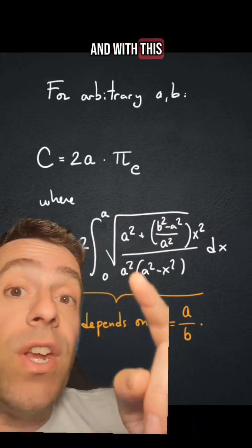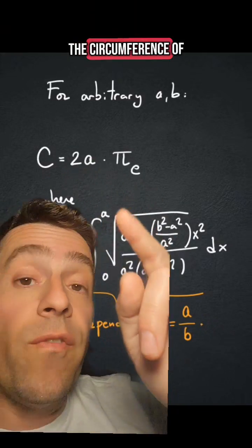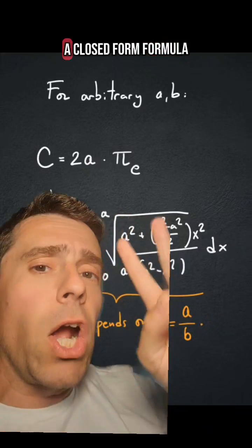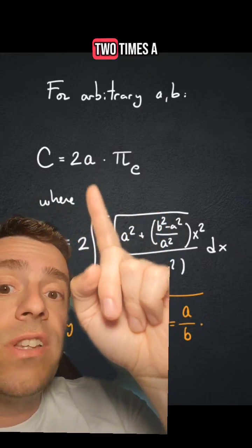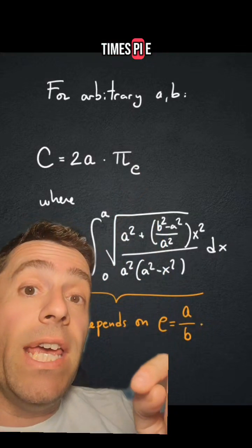And with this definition, the formula for the circumference of an ellipse becomes a closed-form formula 2 times a times π_e.